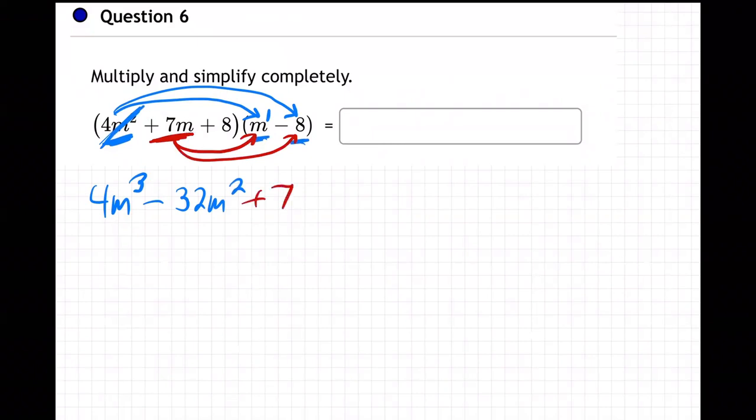So it'll be plus 7m squared. See why it's squared? Because, again, this is m to the 1. Remember, if a letter is not showing a power, it really has an invisible 1 power. So m to the 1, m to the 1, m to the 2, and then the 7's in the front. 7m times m is 7m squared. And then the 7m is going to multiply the negative 8. That'd be minus 56m. 7 times 8 is 56m.